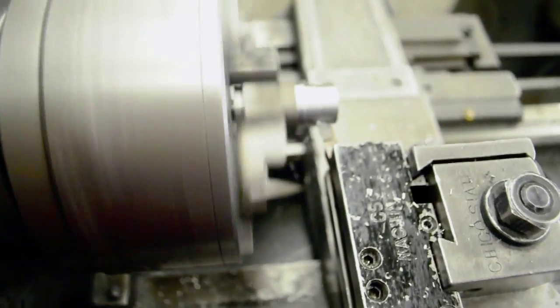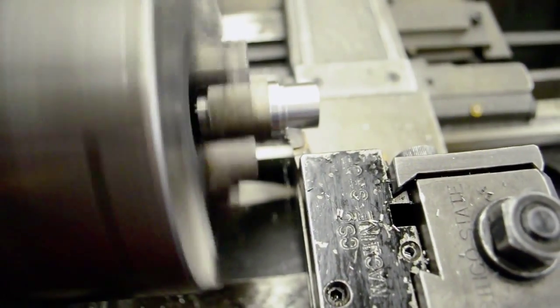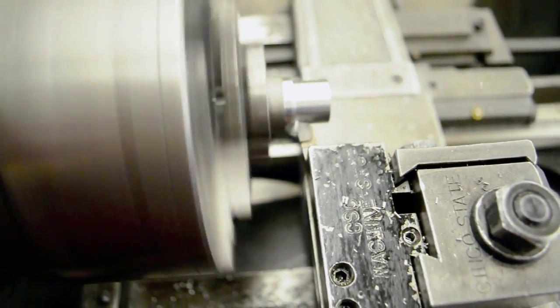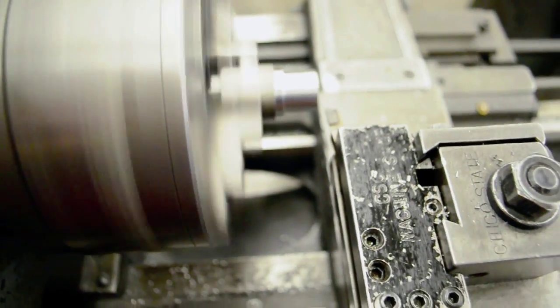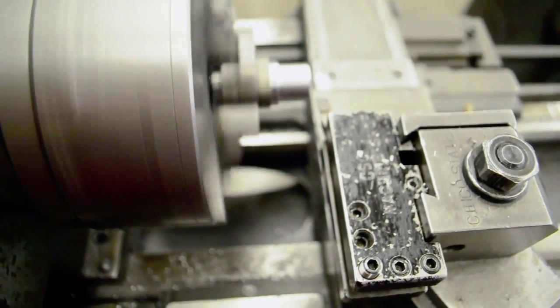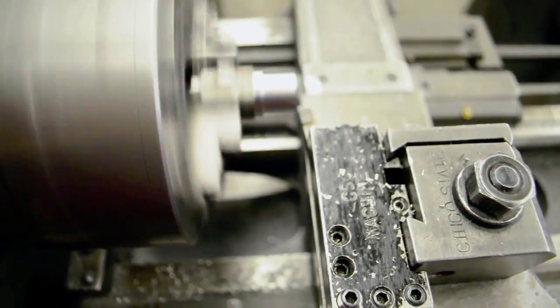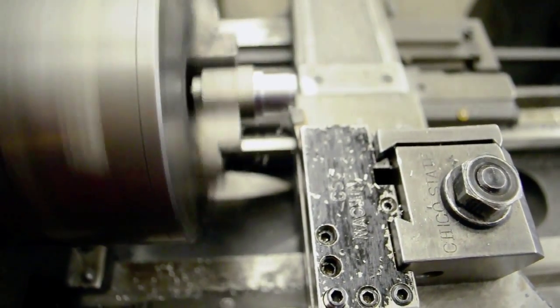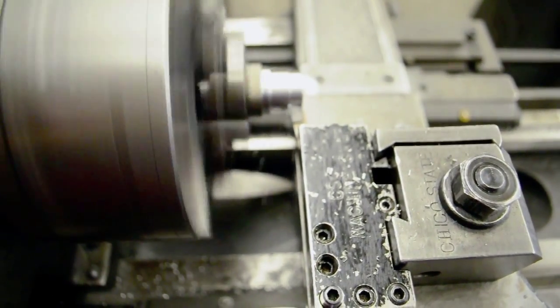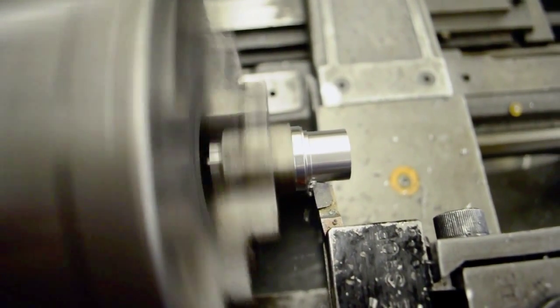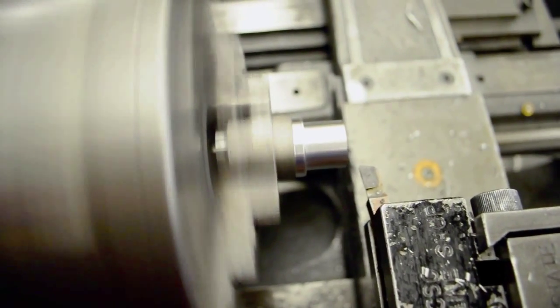So after this pass, we will have removed 150 thousandths, 0.15 total material from the diameter. Here's another 50, so we're down to 0.2. That's 0.2 removed. Should be about 0.8 inches in diameter.